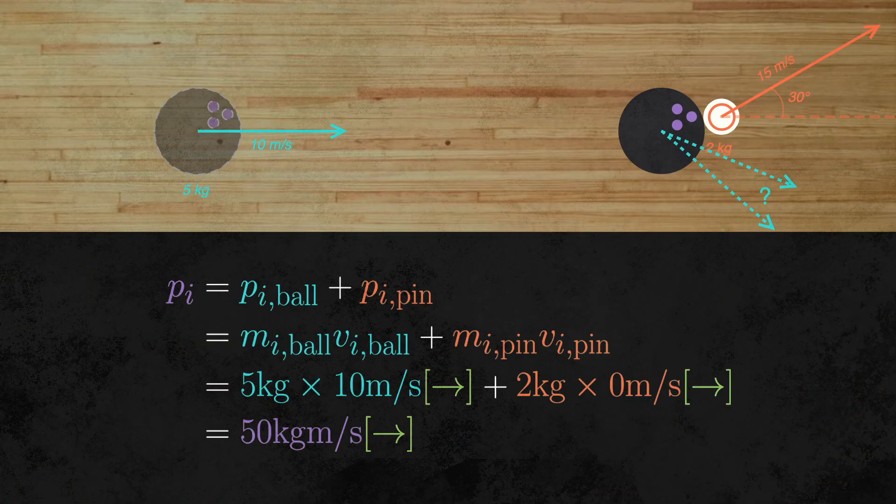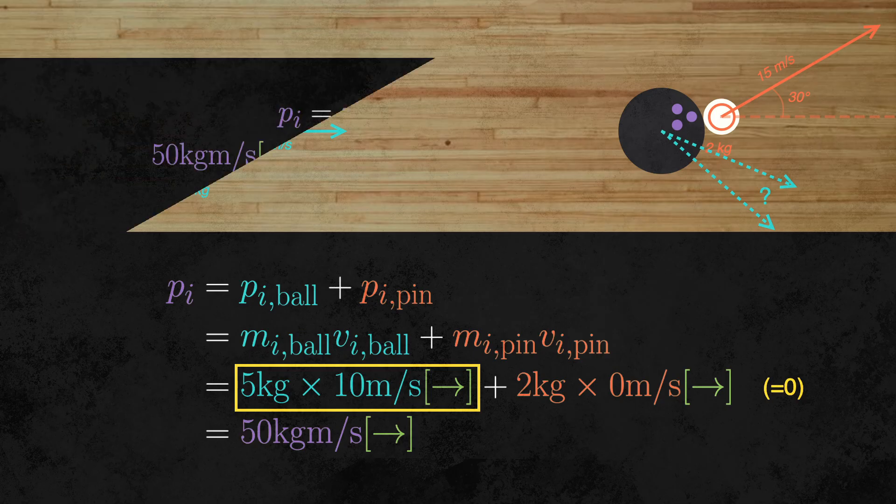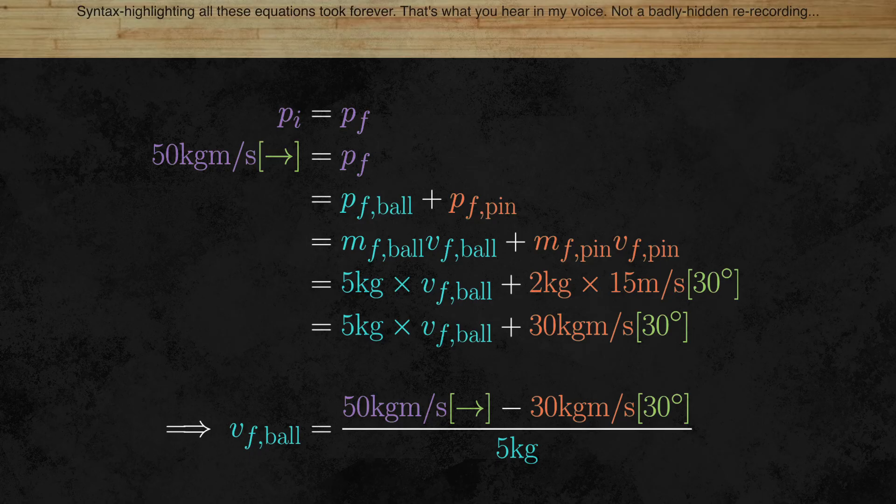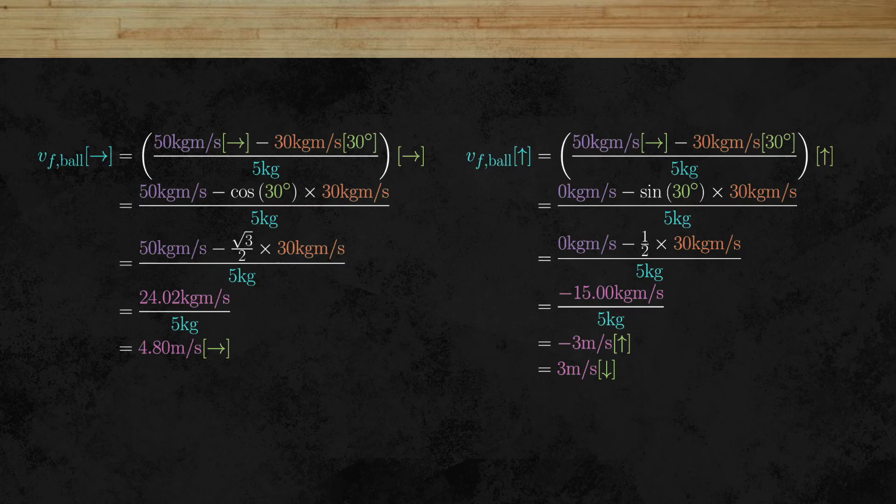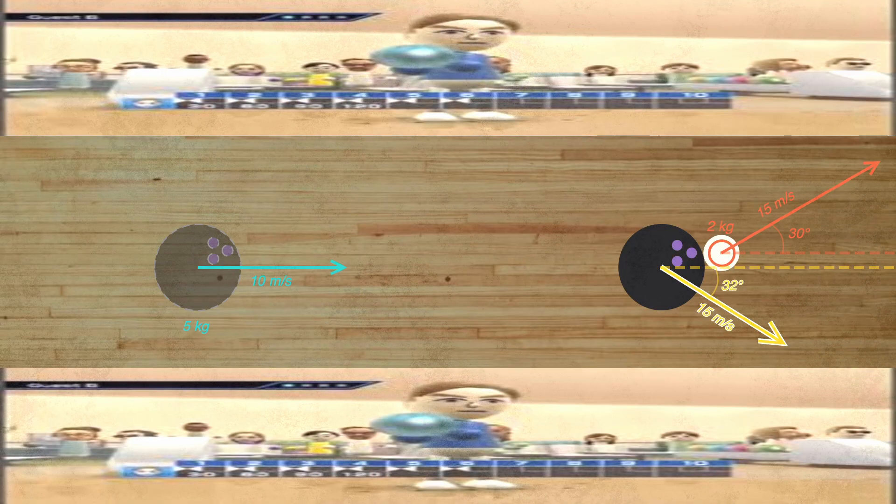First, we calculate the initial momentum of the system. Since the bowling pin isn't moving at the start, this is simply the momentum of the ball. By conservation of momentum, the system must also have this momentum after the collision. We can use this to isolate the final speed of the ball. Right now, we're using momentum in two different directions to calculate the speed. We'll need to separate these out into their components to calculate the final momentum. This example illustrates how momentum gives a framework for figuring out what happens after collisions.